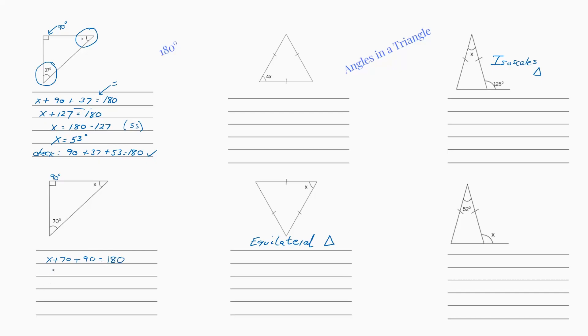So let's add those up which gives us 160. And to get x on its own we're going to take our 160 over and it's going to become a negative because it's a plus. Which leaves us with 20.